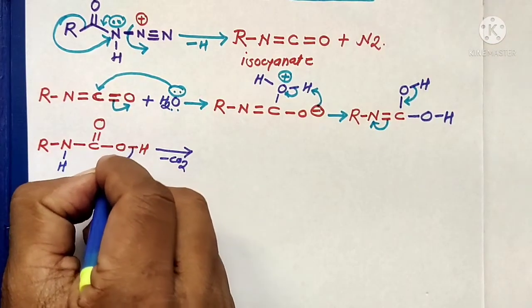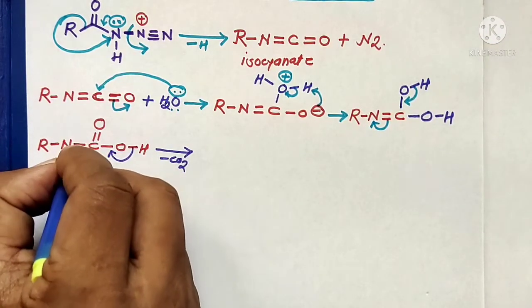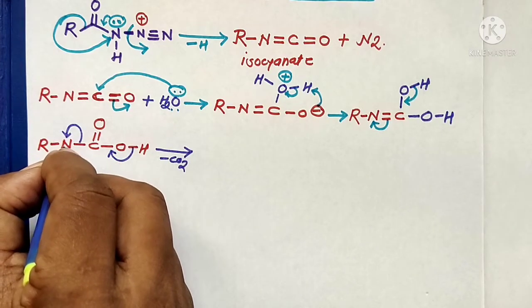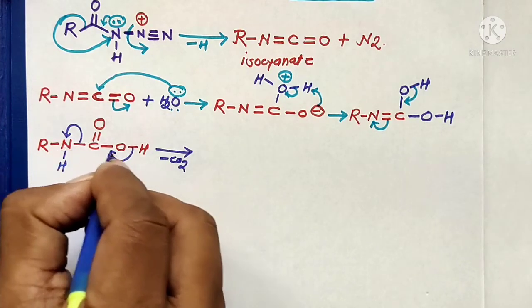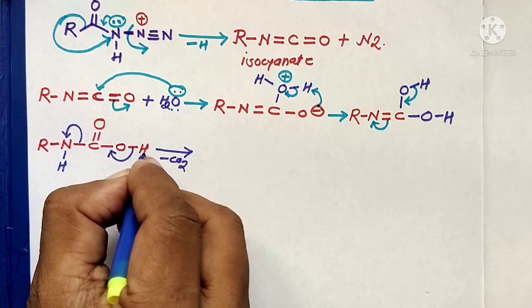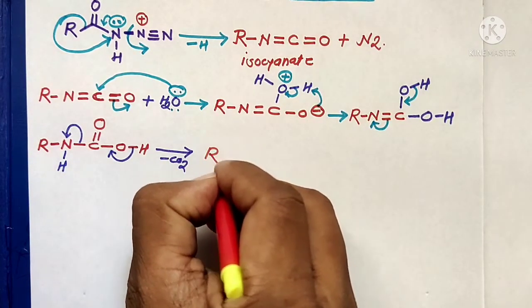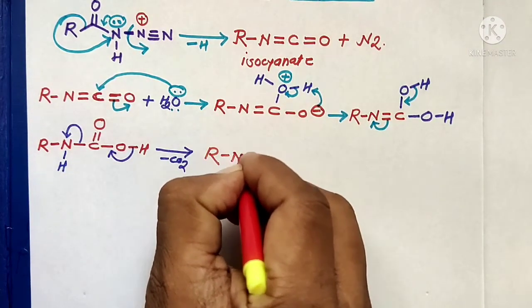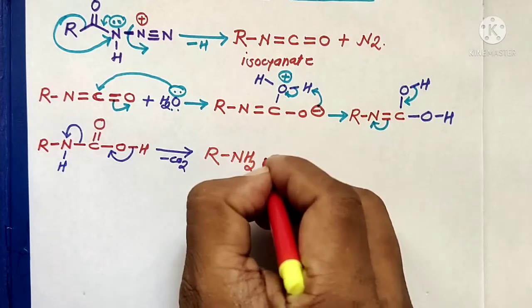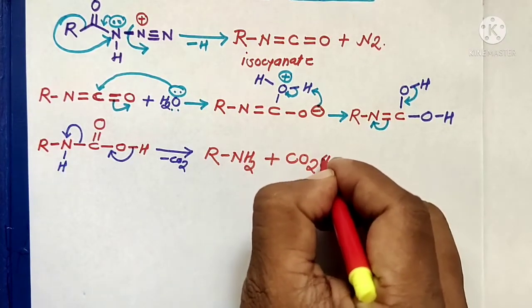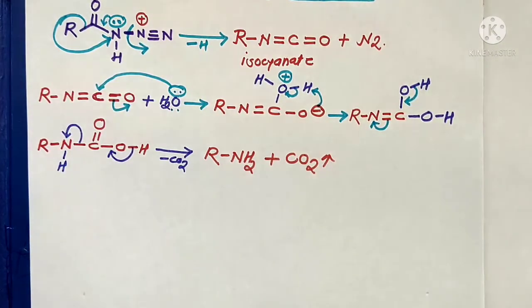In the last step, the bonding electrons shift to form a single-to-double bond, then shift toward the nitrogen atom to form N⁻ ions. These N⁻ ions abstract H⁺ ions to form the main product of this reaction: R-NH₂ (an amine), with elimination of CO₂ gas.